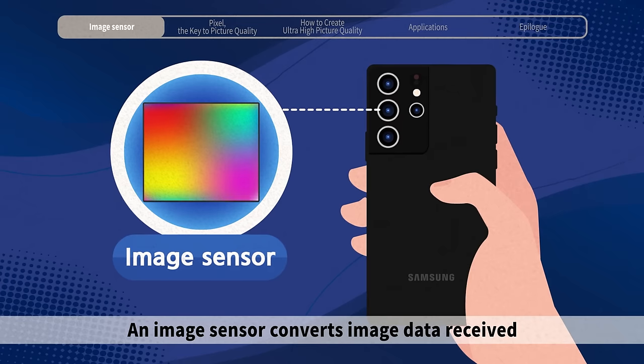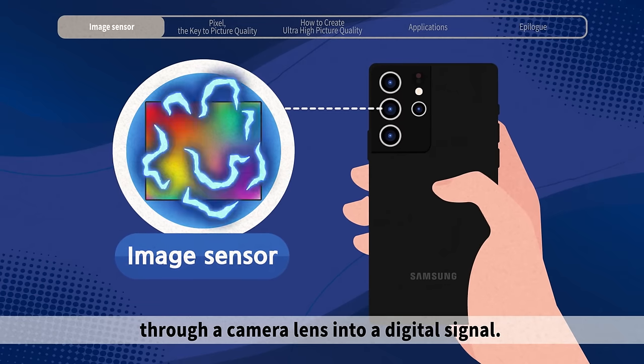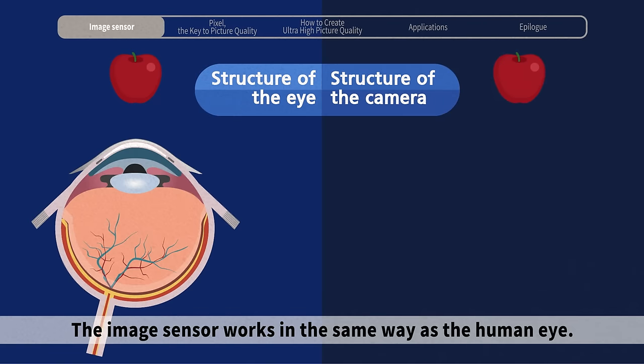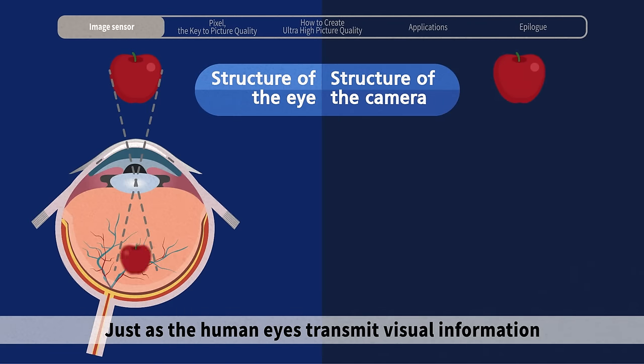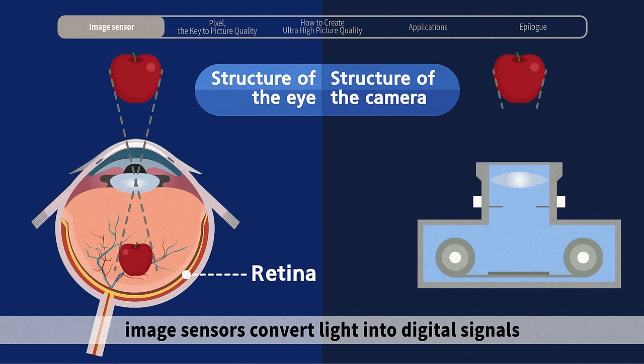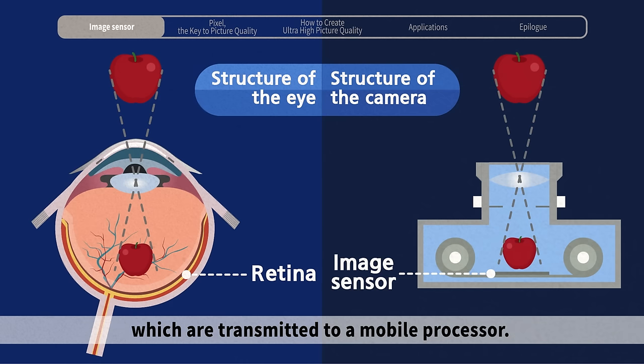An image sensor converts image data received through a camera lens into a digital signal. The image sensor works in the same way as the human eye. Just as the human eye transmits visual information received through the eyes to the brain through the optic nerve, image sensors convert light into digital signals which are transmitted to a mobile processor.